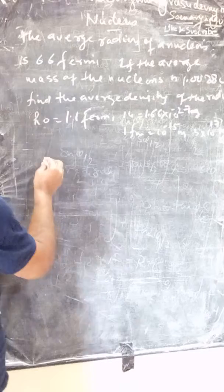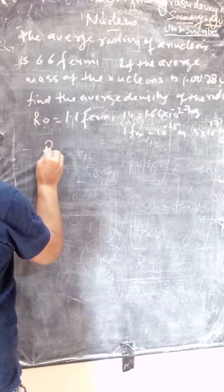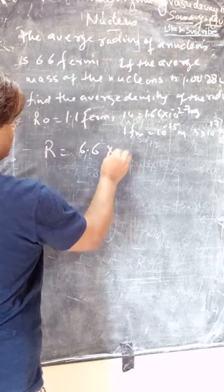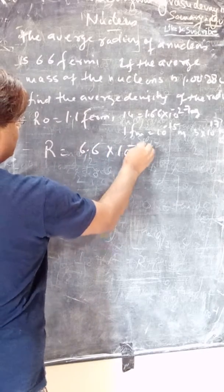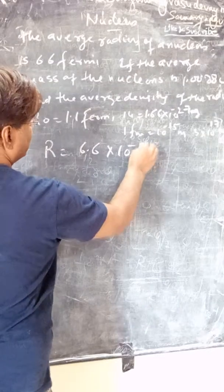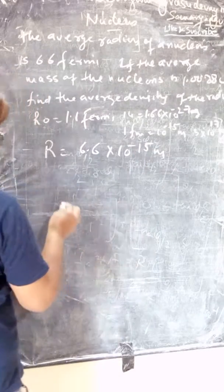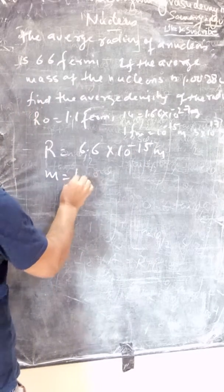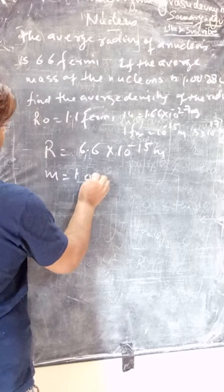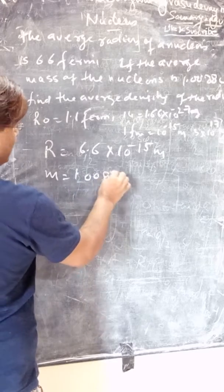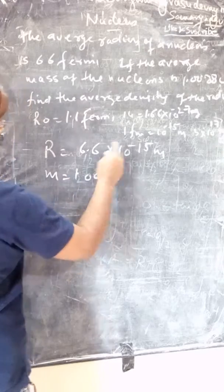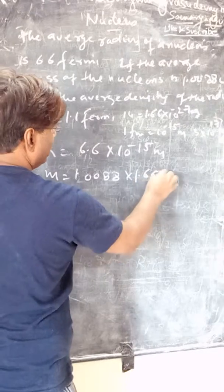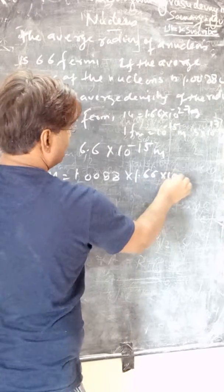We know that r is given as 6.6 fm, so we can write r = 6.6 × 10⁻¹⁵ meter. The mass m is given as 1.0088 u, so we convert to kilograms by multiplying by 1.66 × 10⁻²⁷ kg.